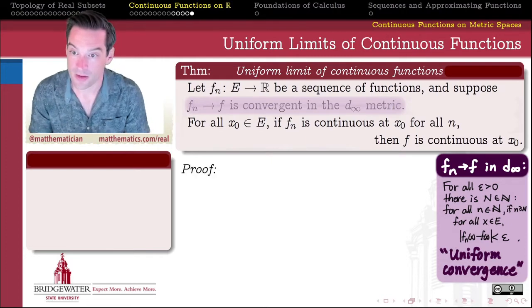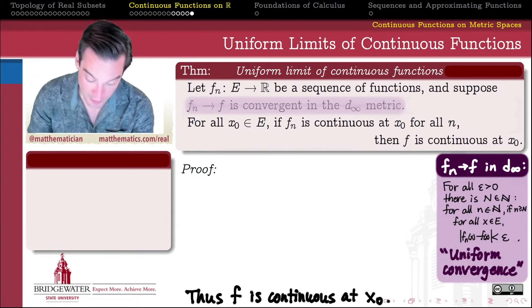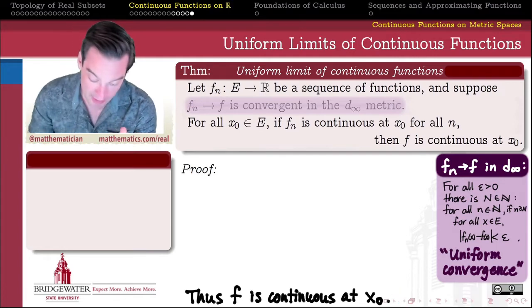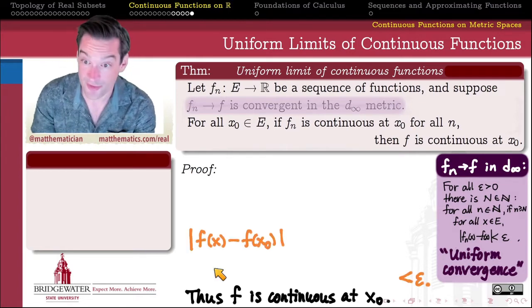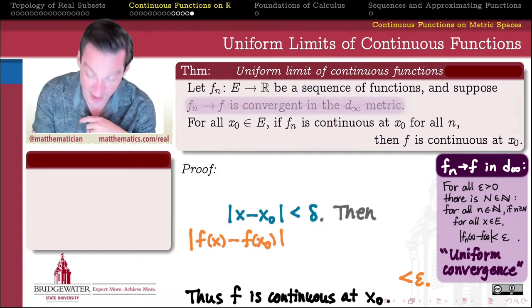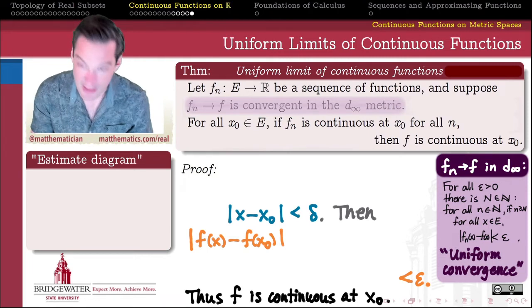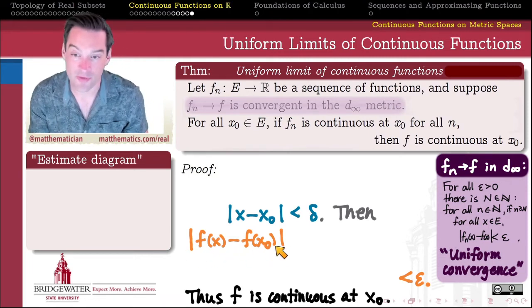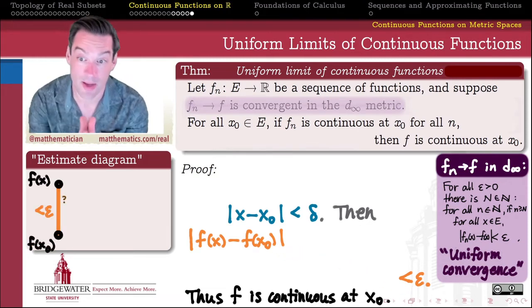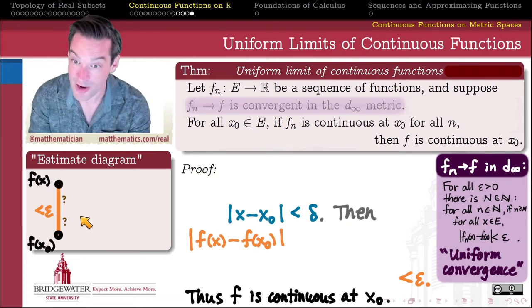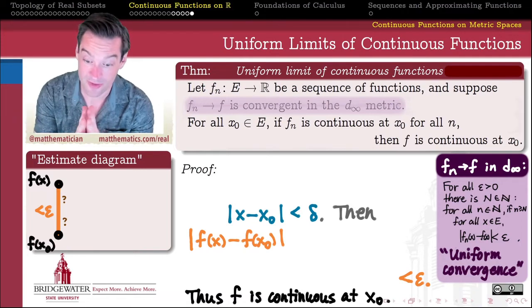How are we going to prove this? Let's look at what the last line of the proof needs to be, and use that to back our way into a strategy. I'm trying to deduce the continuity of my limiting function f. I need the last line to say: thus f is continuous at x0. Backing up a step, the definition of continuity requires me to control the distance between f(x) and f(x0) — bounding it to be less than epsilon whenever the distance between x and x0 is less than delta. But at the start of the proof, we don't yet know how to get any estimate on the difference between f(x) and f(x0).